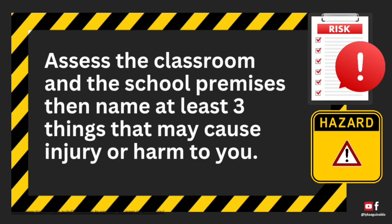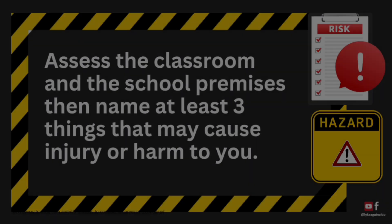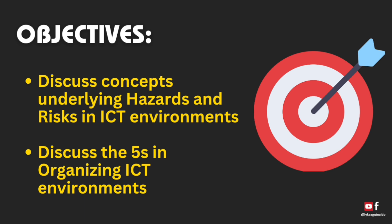Activity: Assess the classroom and the school premises, then name at least three things that may cause injury or harm to you. Here are the objectives of this lesson: Discuss concepts underlying hazards and risks in ICT environments, and discuss the 5S in organizing ICT environments.